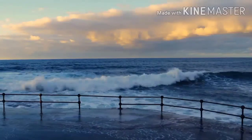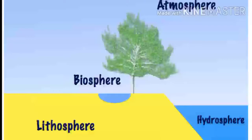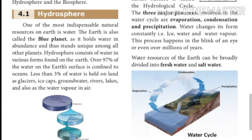Let us go to the introduction of the lesson. In the previous lesson we learned that our planet consists of four spheres: lithosphere, atmosphere, hydrosphere, and biosphere. In the earlier chapter we studied about the lithosphere and atmosphere. We shall now learn the other two spheres, namely the hydrosphere and the biosphere.